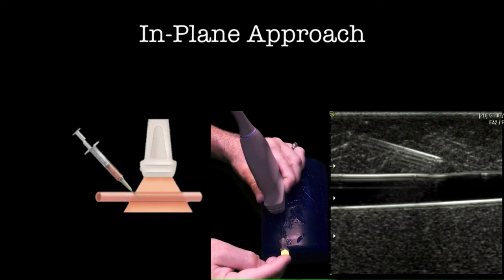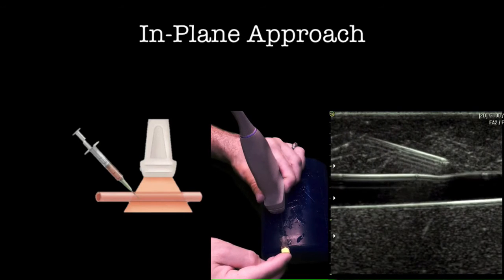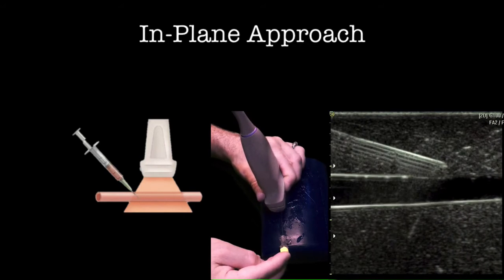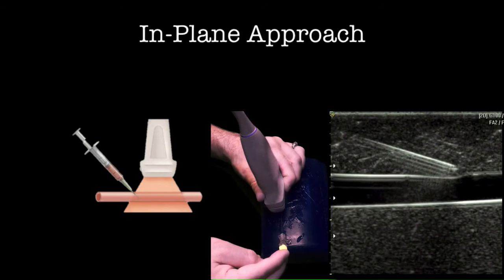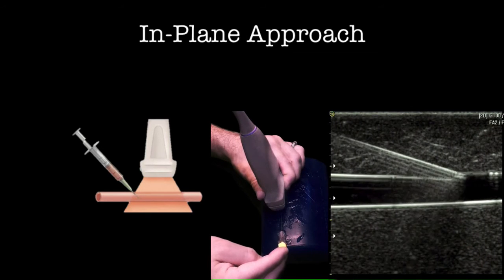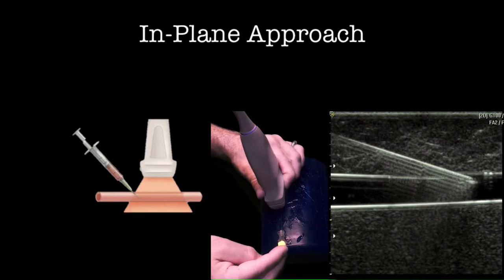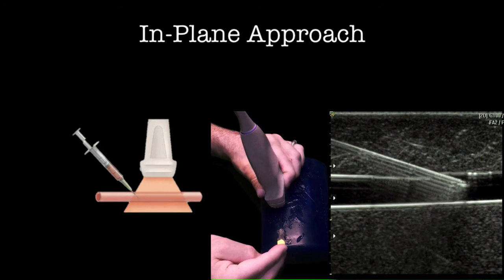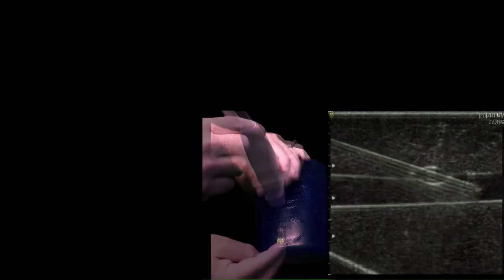When all three structures—the transducer, the needle, and the vein—are lined up, the needle tip can easily be seen entering the anterior wall of the vein and not puncturing the posterior wall. This technique is thought to be safer as posterior wall penetrations occur less frequently since the needle is seen in its entirety.